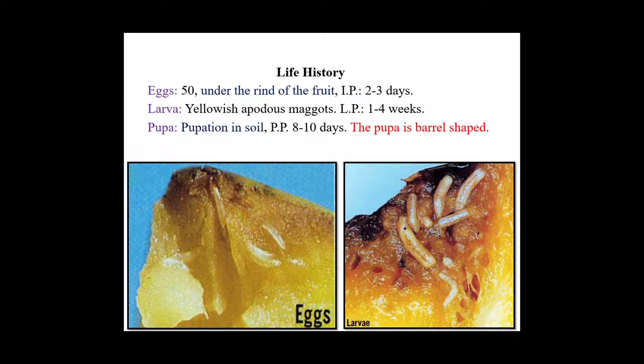Life history of fruit fly: eggs are deposited under the rind of the fruit. The larva is a yellowish, apodus maggot — legless larva. Pupation takes place inside the soil and the pupae are barrel-shaped.